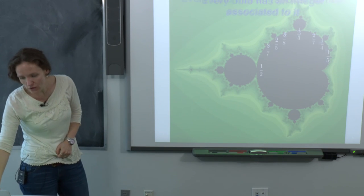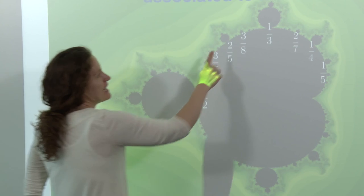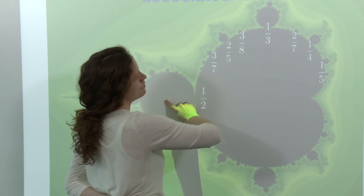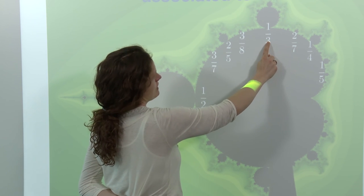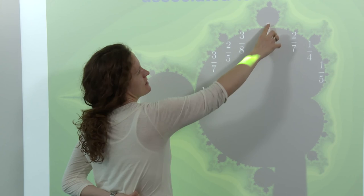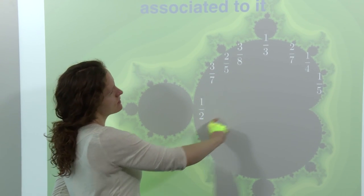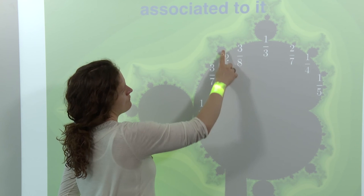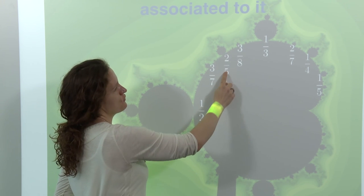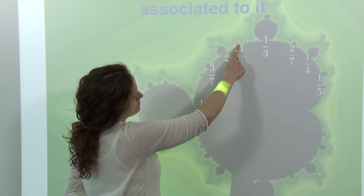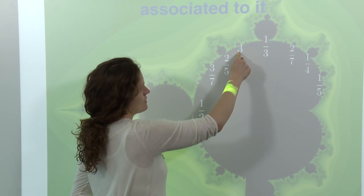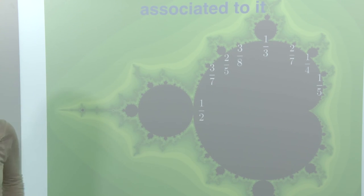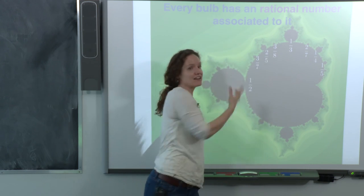And in fact the golden ratio is also hiding there. There is a way to associate not only an integer but a fraction — a rational number — to every bulb, coming from the shape of the filled Julia set. The bulb with integer 3 has fraction one-third; the bulb with integer 2 has fraction one-half. Adding straight across the numerators and denominators — 1 plus 1 on top gives 2, and 3 plus 2 on the bottom gives 5 — the fraction for the largest bulb between them is two-fifths. Continuing this process, these fractions turn out to be ratios of successive Fibonacci numbers, which means the golden ratio is hiding in the Mandelbrot set.